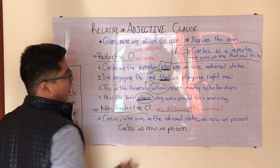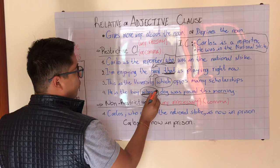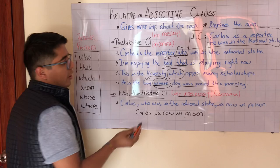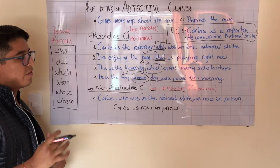In the last example we have: 'He is the boy whose dog was found this morning.' Here we use 'whose' to express possession — we are saying that the dog found this morning belongs to this boy.